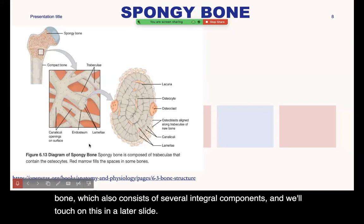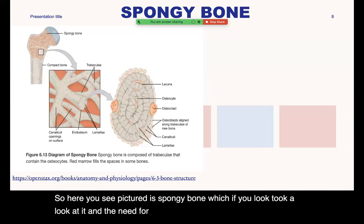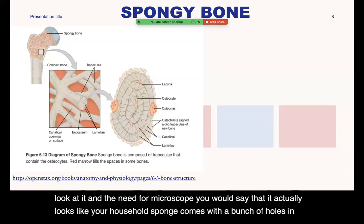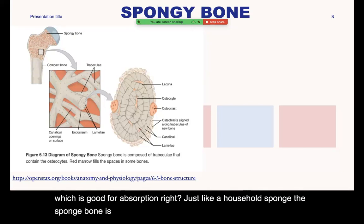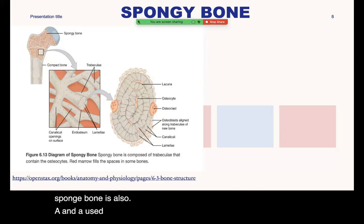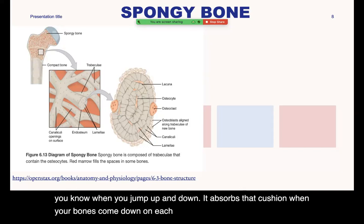Here you see pictured the spongy bone. If you looked at it under a microscope, you would say it actually looks like your household sponge — it comes with a bunch of holes in it, which is good for absorption. Just like a household sponge, the spongy bone is also an absorber — it absorbs shock, meaning when you jump up and down it cushions your bones, which is very beneficial to us.